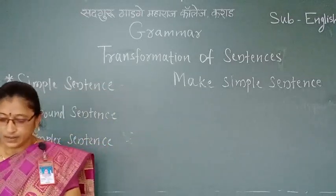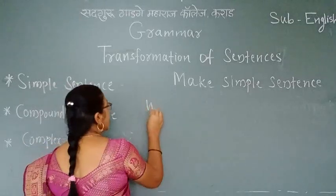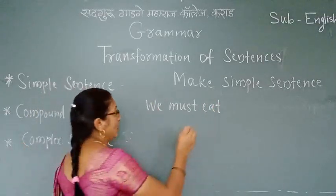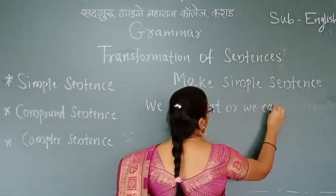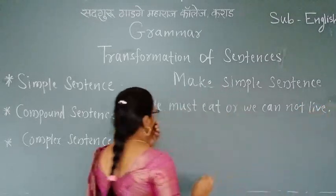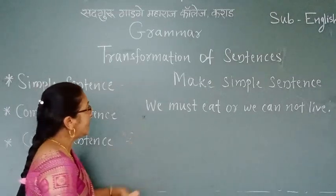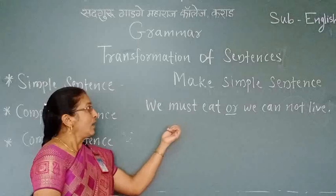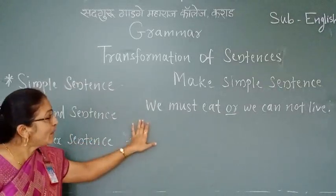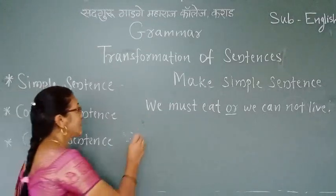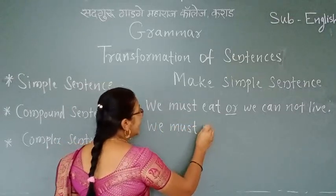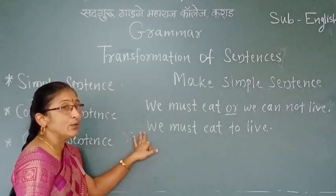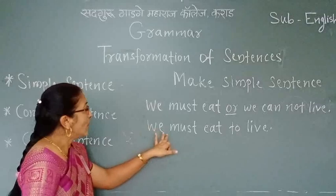One more example: 'We must eat, or we cannot live.' This sentence is a compound sentence, and with the help of the coordinate conjunction 'or' we join the two clauses. By using the infinitive, we make a simple sentence. Our answer is: 'We must eat to live.'